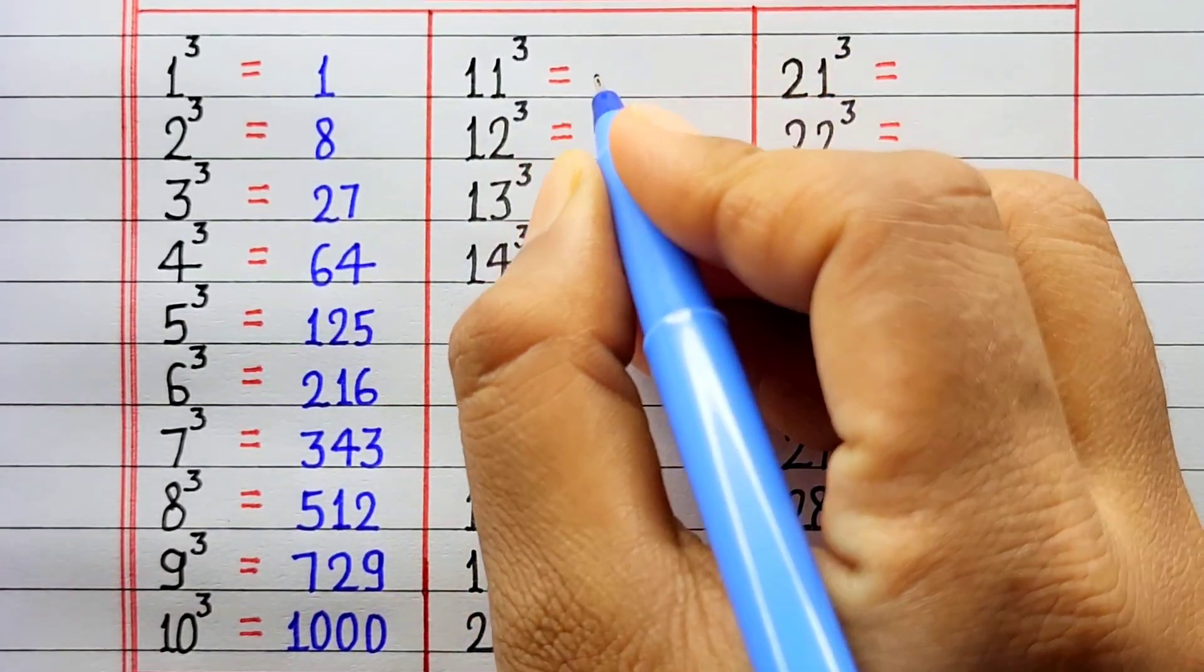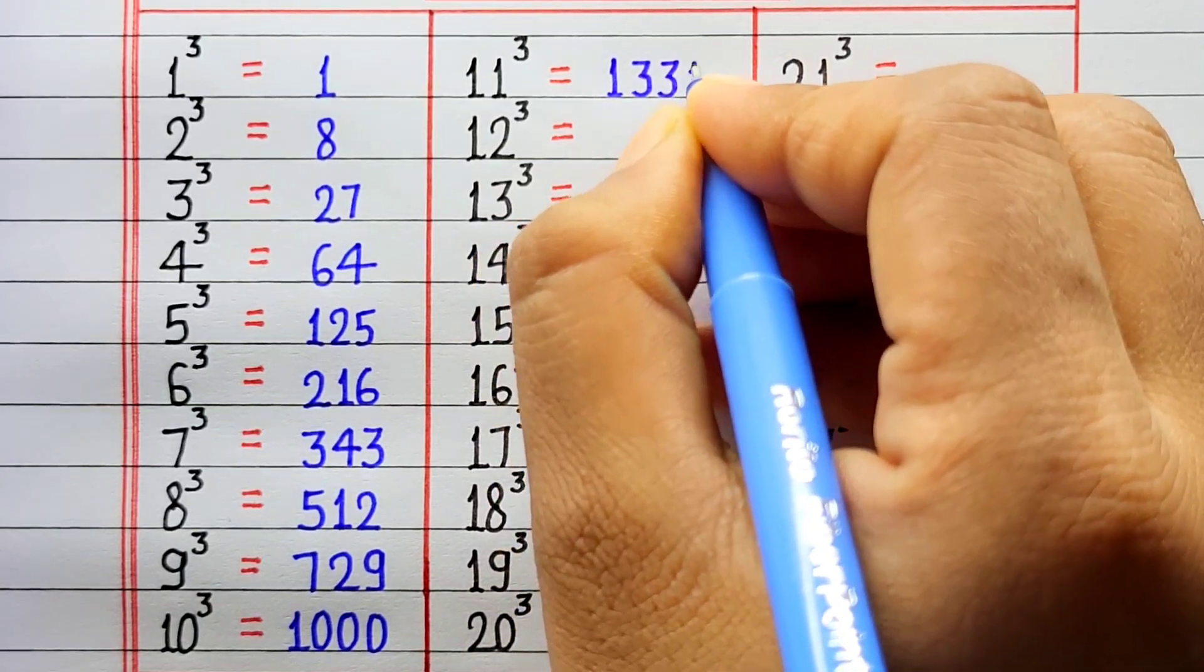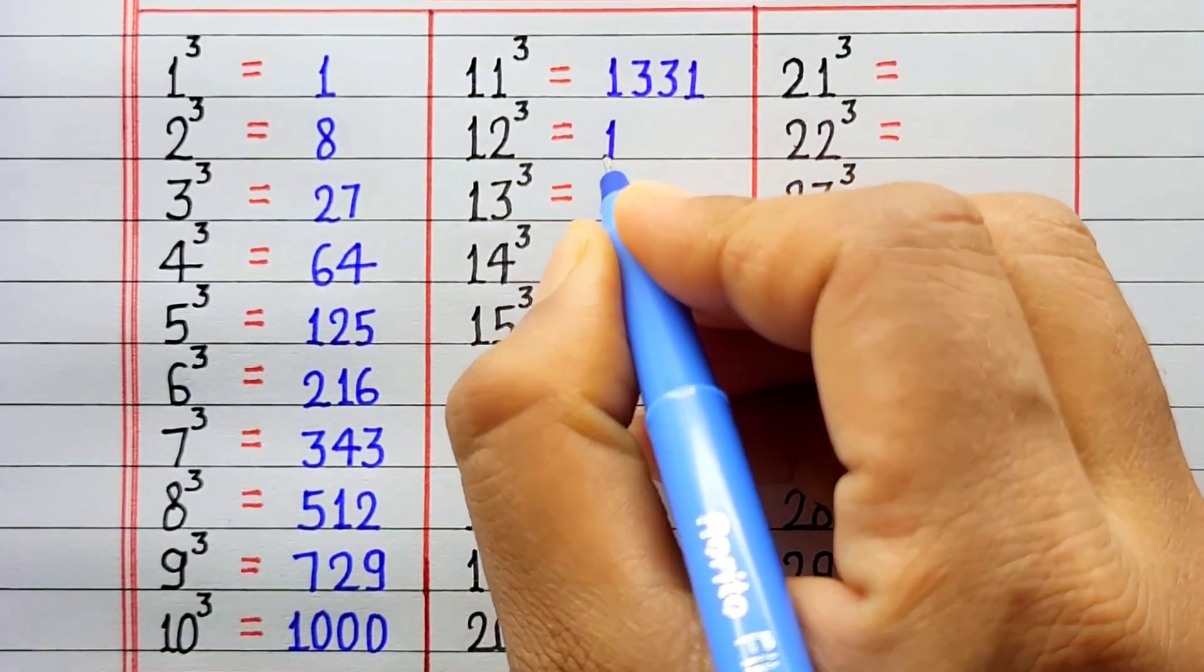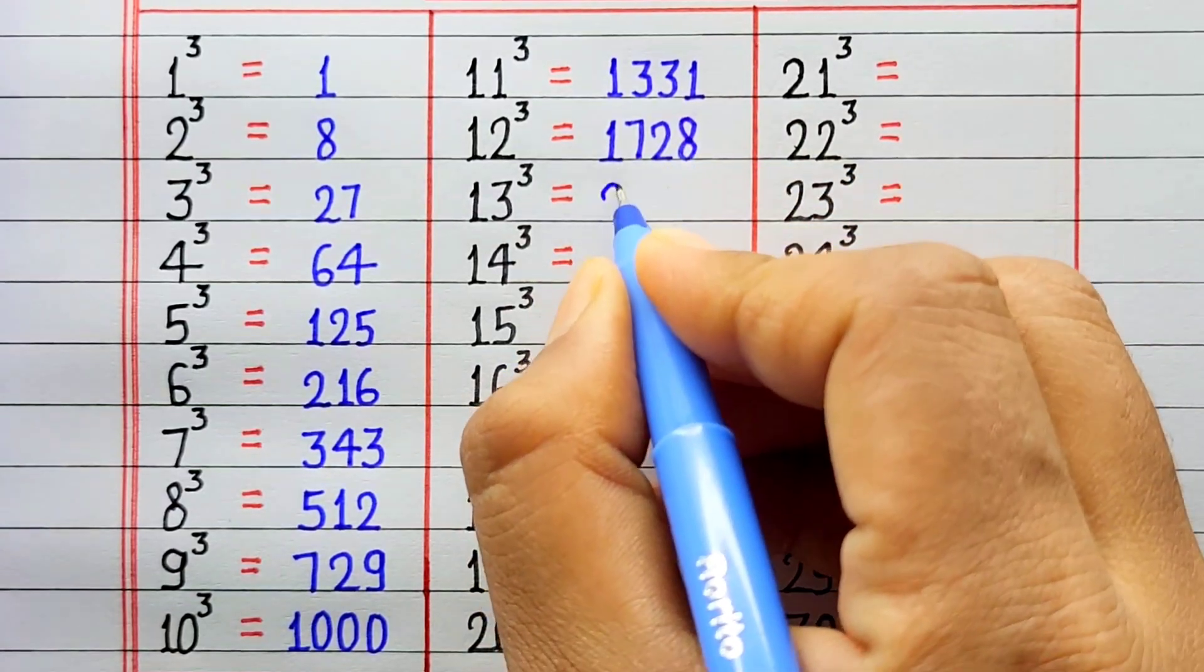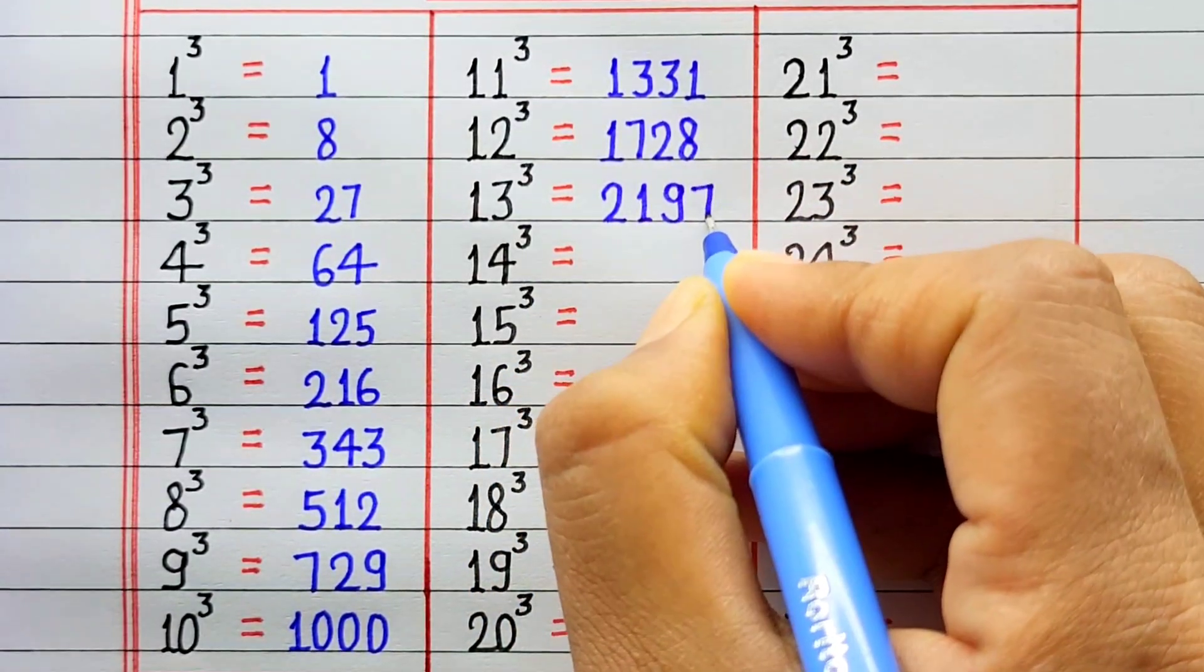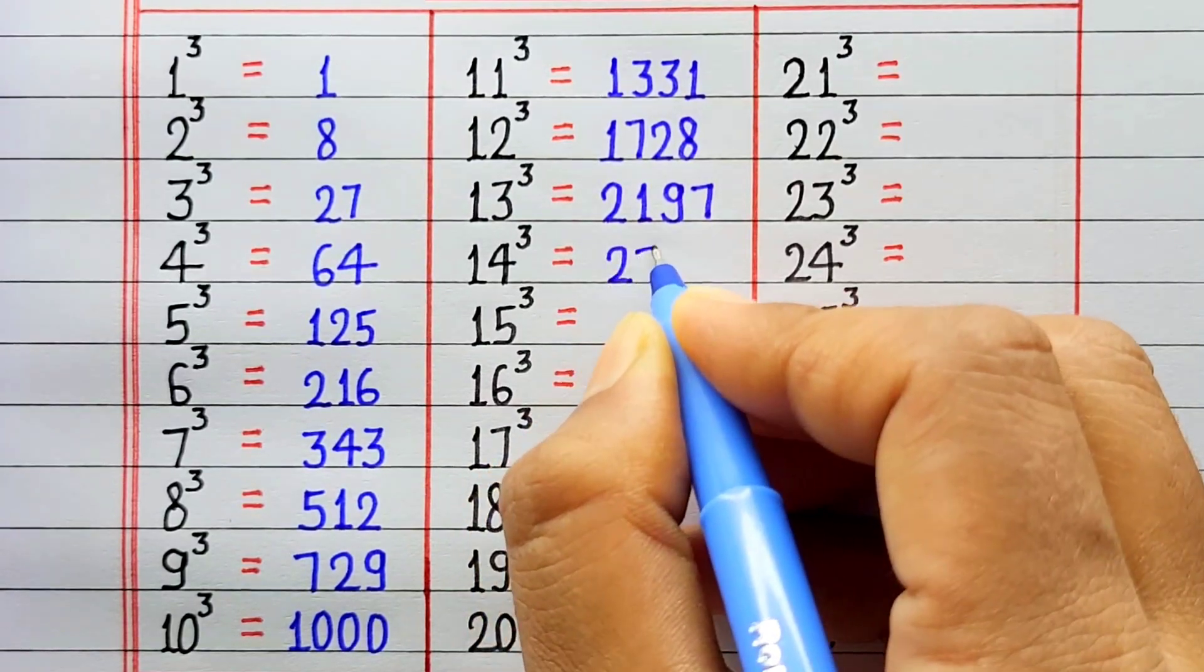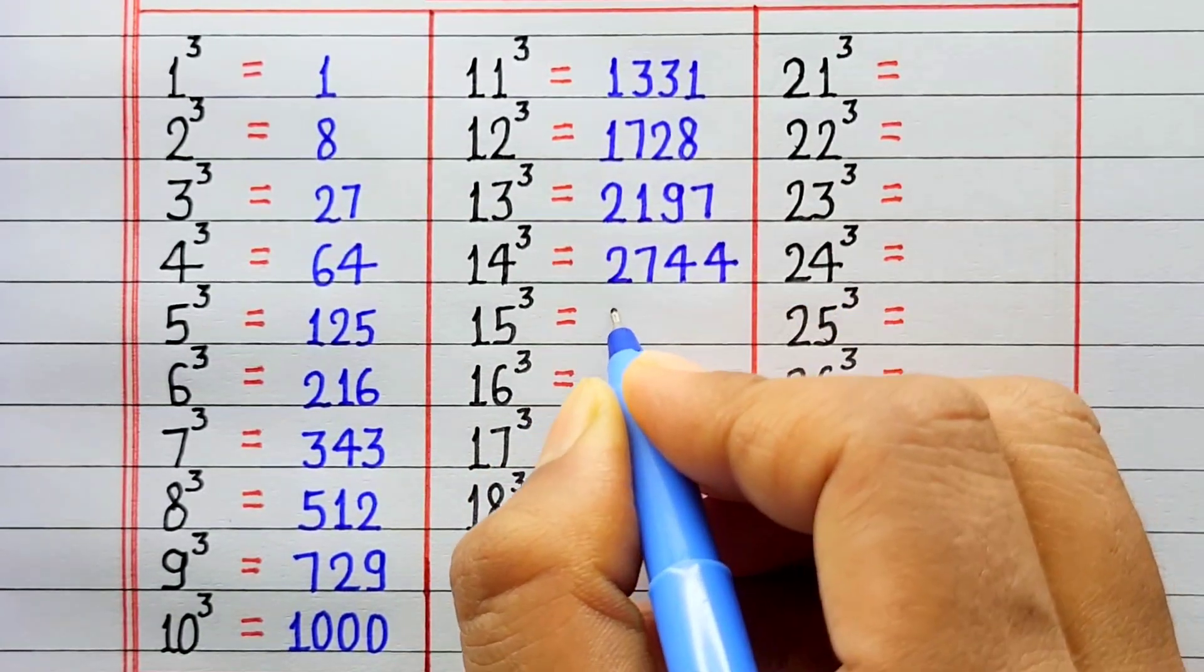Cube of 11 is 1331. Cube of 12 is 1728. Cube of 13 is 2197. Cube of 14 is 2744.